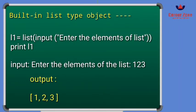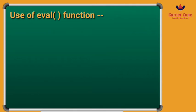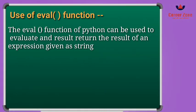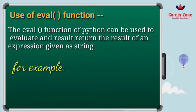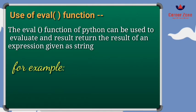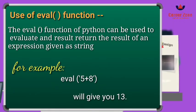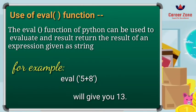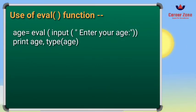Now let us look at the eval() function in Python. The eval() function is used to evaluate and return the result of an expression written as a string. For example, if you use eval() to add two numbers represented as a string, they will be added correctly, but without eval(), the interpreter will give an error. For instance, eval('5 + 8') gives the answer 13.